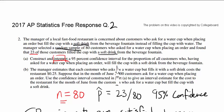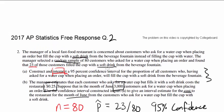Now let's look at number 2. The manager estimates that each customer who asks for a water cup but fills it with a soft drink costs the restaurant $0.25. Suppose that in the month of June, 3,000 customers ask for a water cup and use the confidence interval constructed in part A to give an interval estimate for the cost to the restaurant for the month of June.